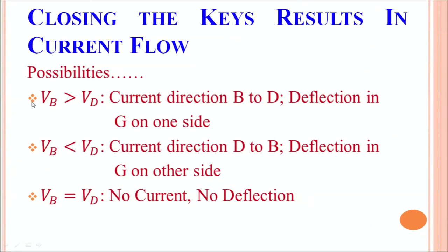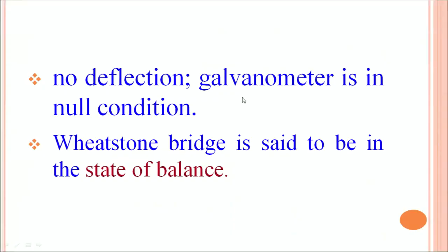When the potential at B is greater than the potential at D, current flows through the galvanometer and it deflects in a certain direction. When the potential at B is less than the potential at D, current flows again but in the opposite direction, and the galvanometer deflects in the opposite direction. When the potential at B is equal to the potential at D, no current flows through that part of the circuit and the galvanometer shows no deflection. This is the null condition of the galvanometer.